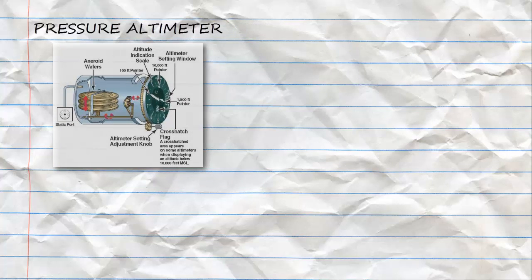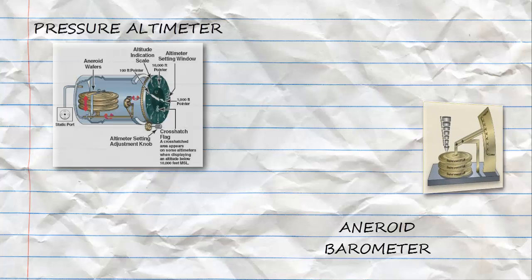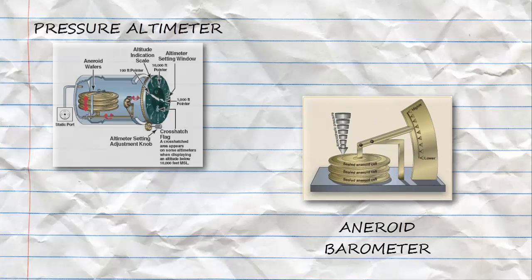An altimeter is a barometer. A pressure altimeter, the kind found in most airplanes, measures the pressure of the atmosphere around the aircraft with the measurements given in feet above mean sea level. In other words, a pressure altimeter is nothing more than a barometer but its readings are in height not inches of mercury or millibars.